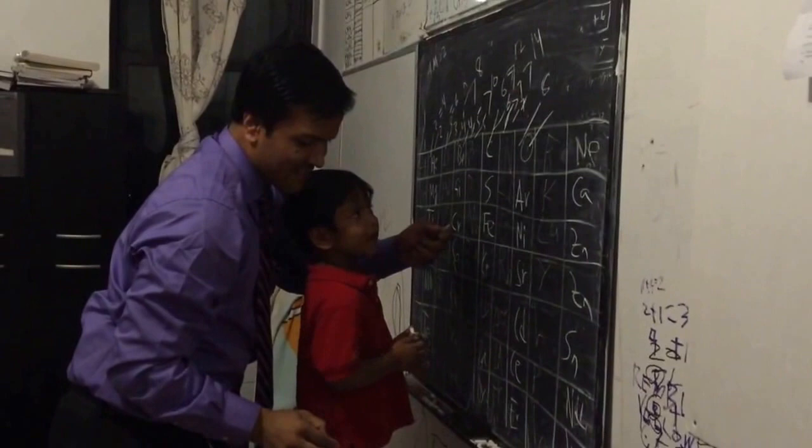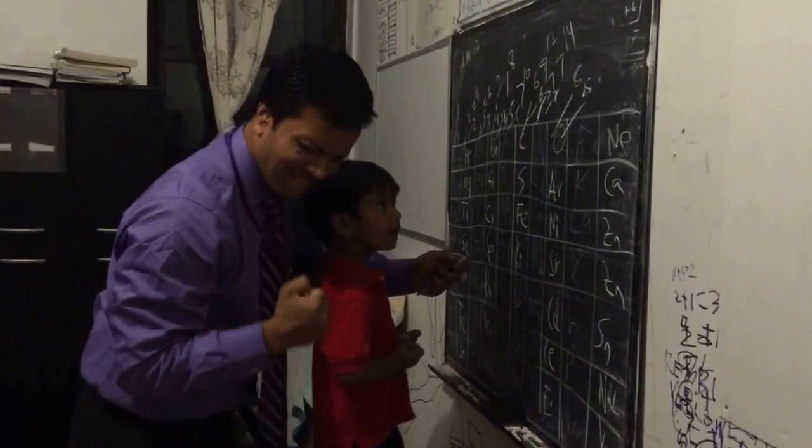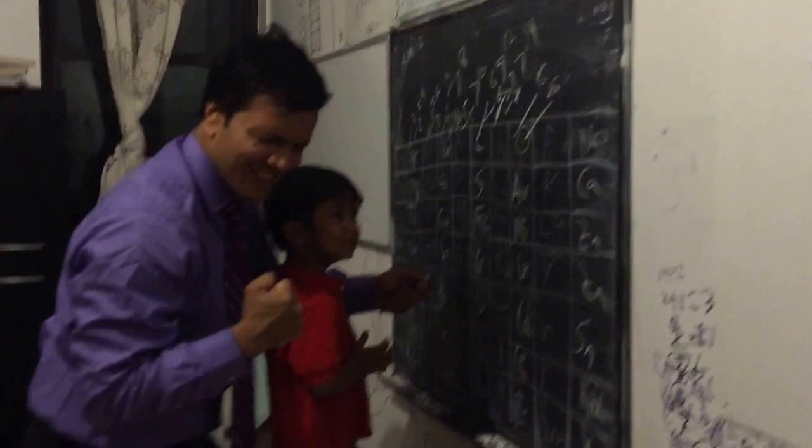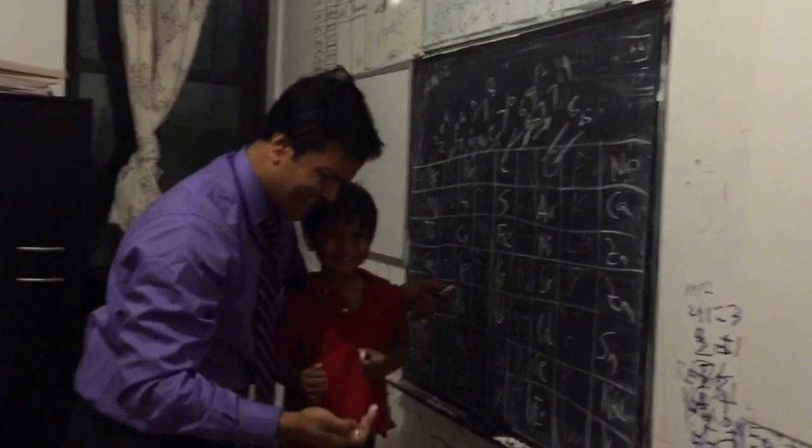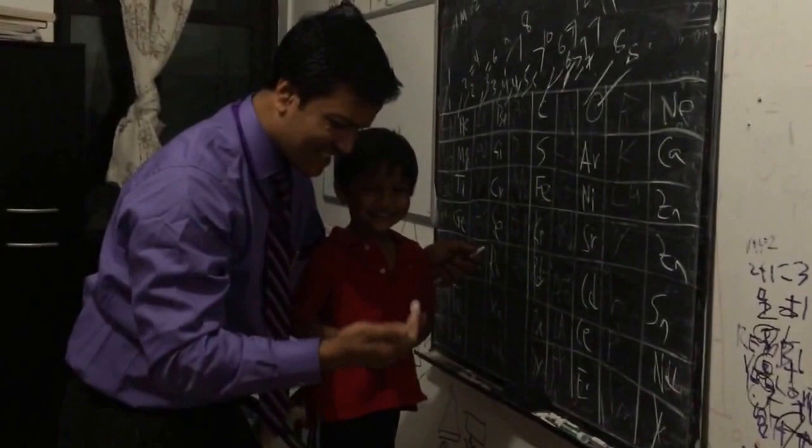Hafnium, tantalum, tungsten, then we're on to rhenium, osmium and iridium, platinum, gold to make you rich till you grow old, mercury to tell you when it's really cold, thallium, and lead that isn't it for your tummy, polonium, astatine would not be yummy, radon, and francium will last a little time, radium, then actinides at 89.